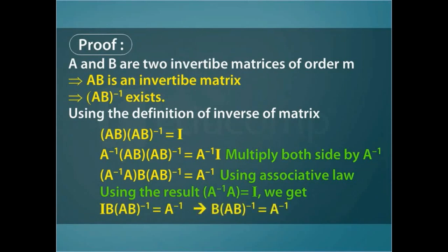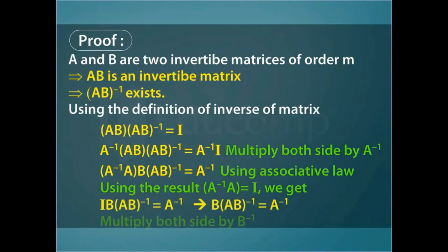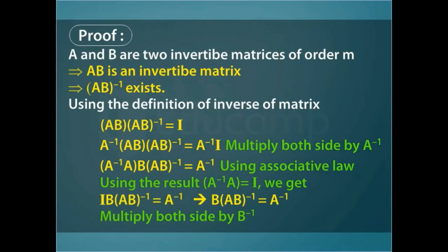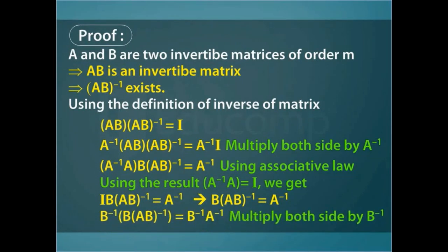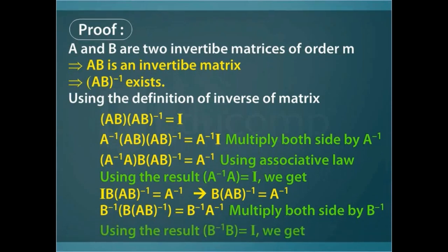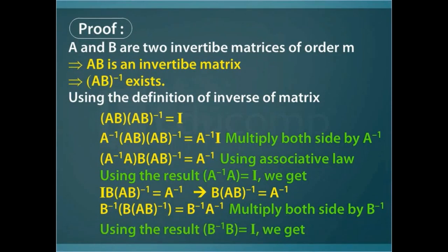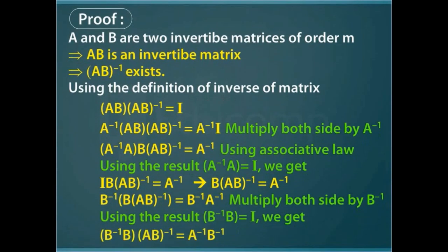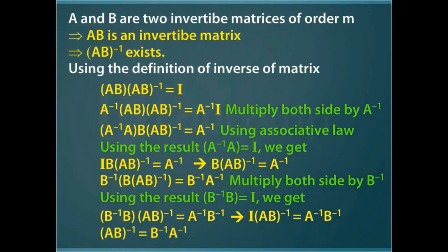Pre-multiplying both sides by B inverse, we get the product of B inverse, B, and AB whole inverse equals the product of B inverse and A inverse. Using the result B inverse B equals I, we get AB whole inverse equals the product of B inverse and A inverse.